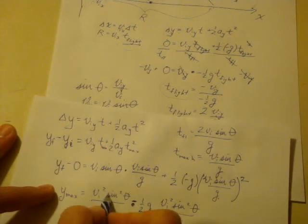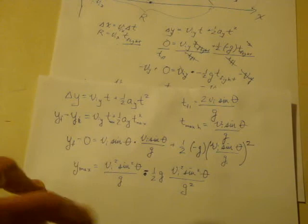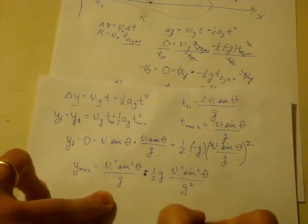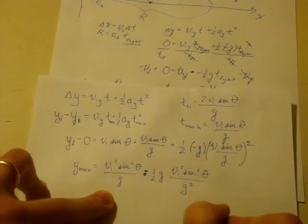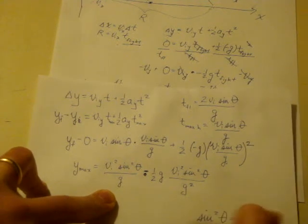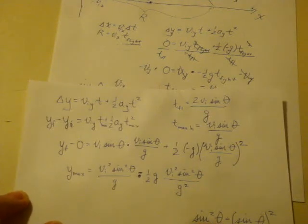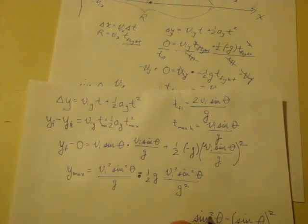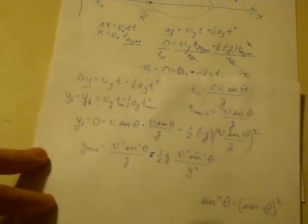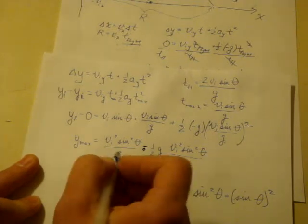Something I did here that you may or may not be familiar with, and it's something you should get very comfortable with, is writing something like this, sine squared theta, is the exact same thing as this. You're taking, the order of operation here is that you take the sine of whatever that angle is, and then you square it. It's just written this way in a shorter hand. So make sure that you understand that.